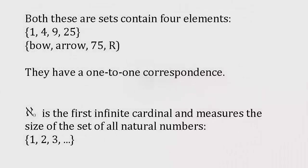A set is a collection of things, which might be numbers or anything else, and the symbol used to show a set is a pair of curly brackets. For instance, {1, 4, 9, 25} and {arrow, bow, 75, R} are both sets. The size of a set, how many elements it contains, is known as its cardinality.